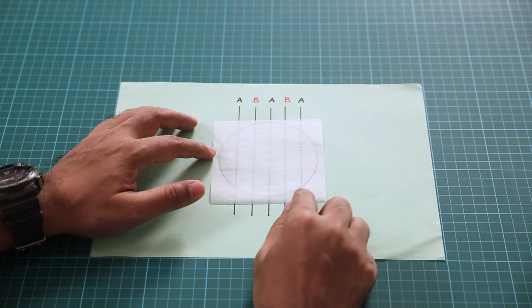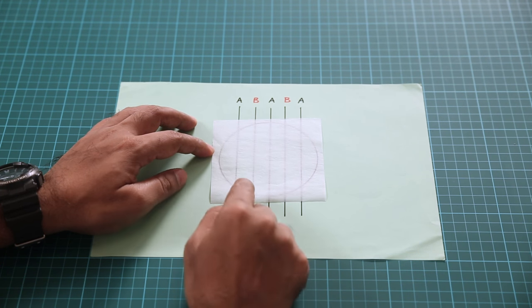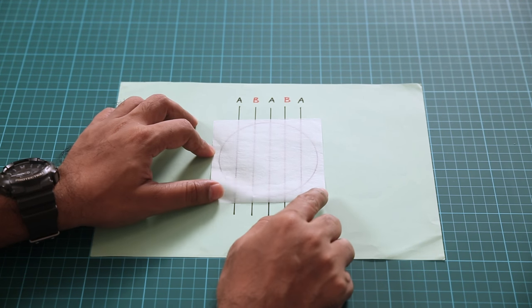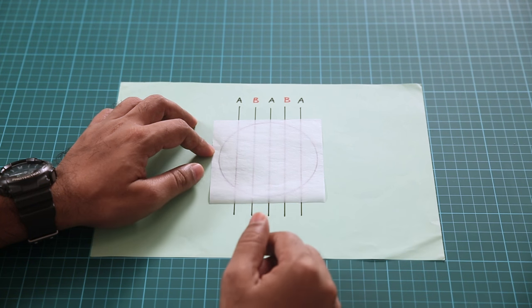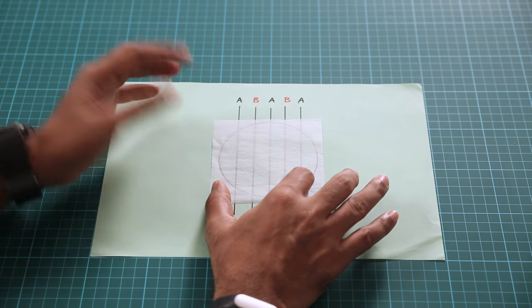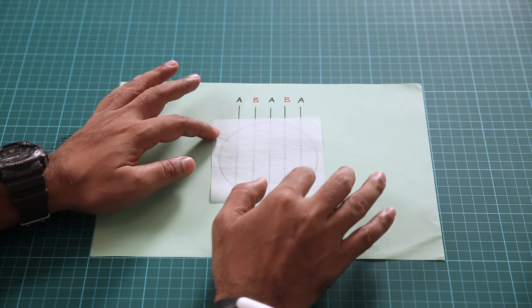Alright, now let's make the paper baubles. For the baubles, I'm using kite paper because it's thin and it's translucent and you get them in different colors. So you can choose your favorite colors. I'm going to make white.